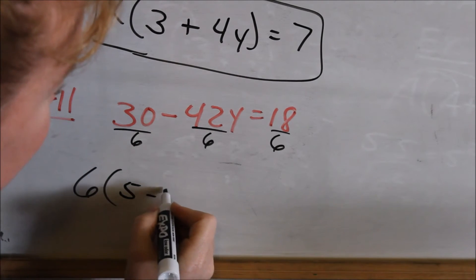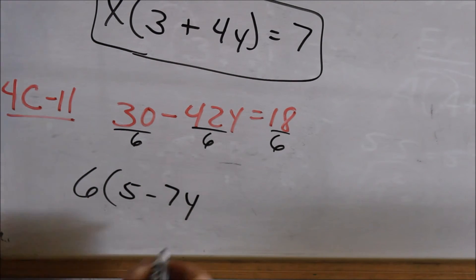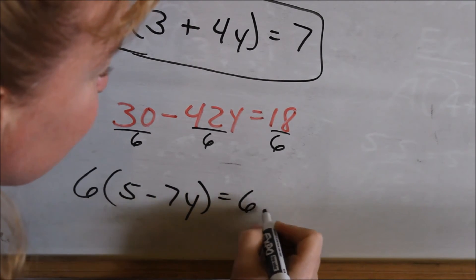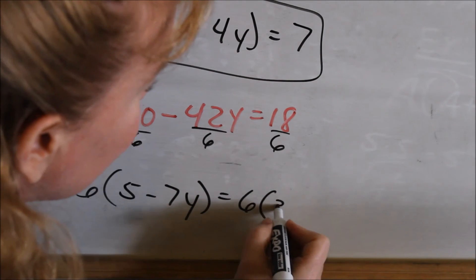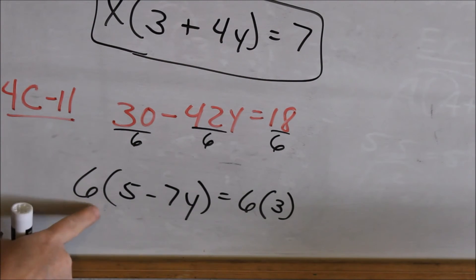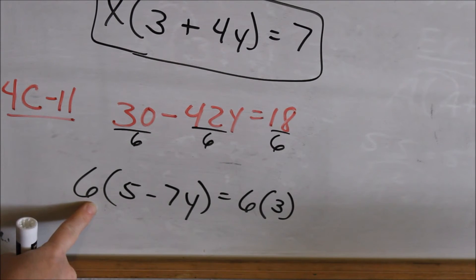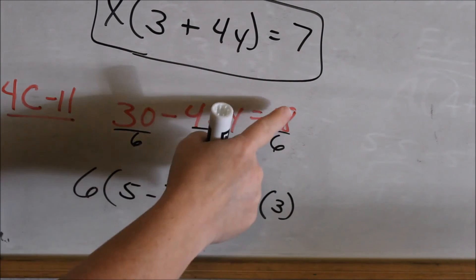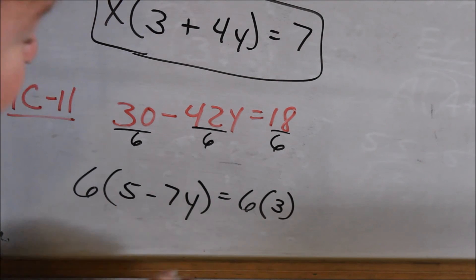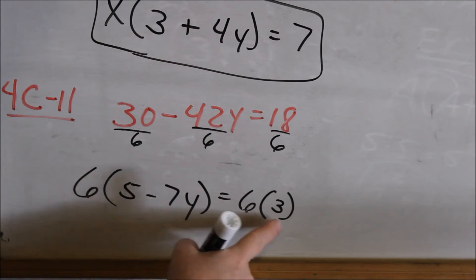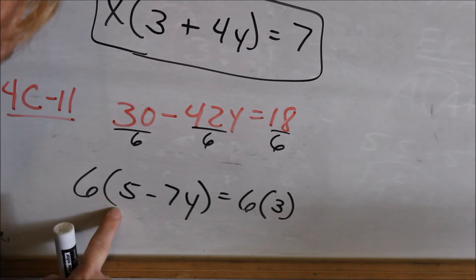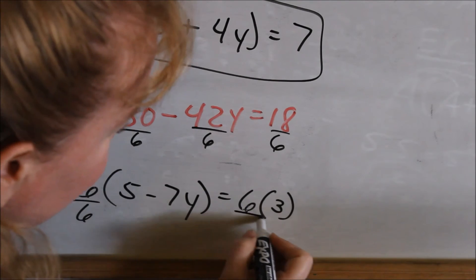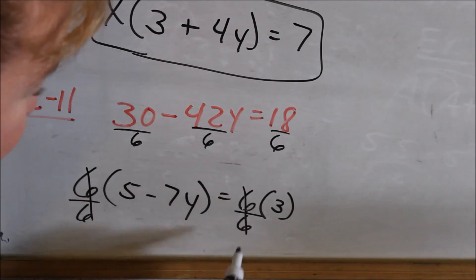Negative 42 divided by positive 6 is negative 7, and you still have your y. On the right side, write 6 in front and 18 divided by 6 is 3. If you go back and distribute: 6 times 5 is 30, 6 times negative 7y is negative 42y, 6 times 3 is 18. Then you can cancel the 6s — 6 is being multiplied to each side, so dividing both sides by 6 makes them cancel, leaving 5 minus 7y equals 3.